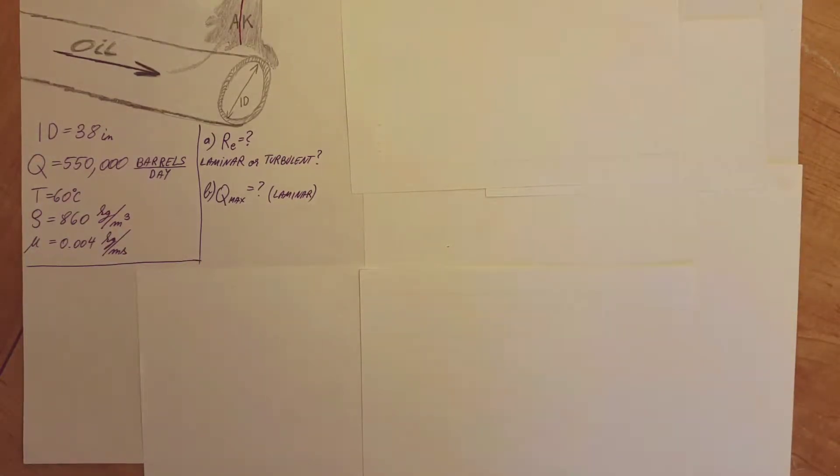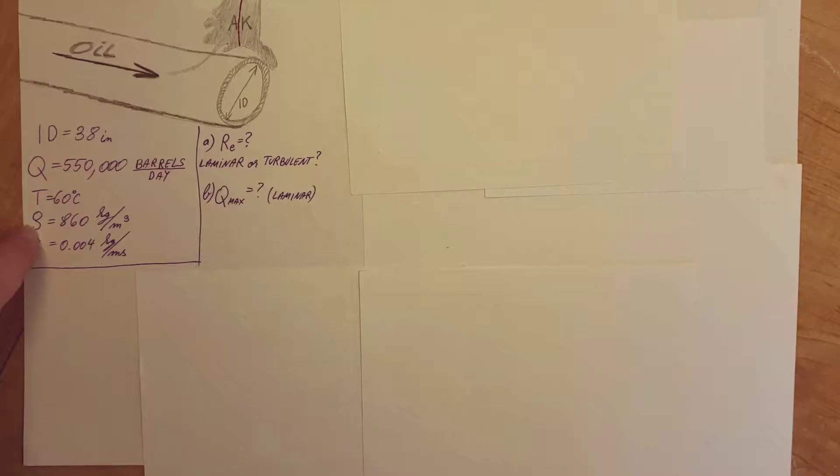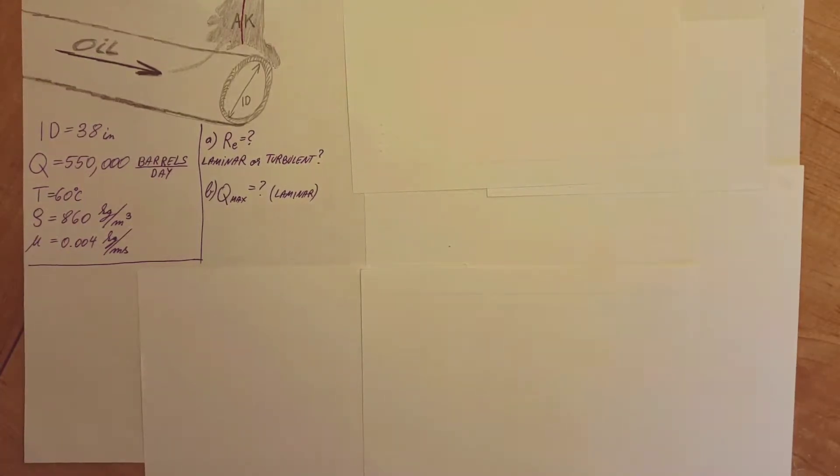All right, this is a fluid mechanics problem dealing with flow rates and the Reynolds number. In this problem, they're talking about the present pumping rate of crude oil through the Alaska pipeline with an inner diameter of 38 inches, which is 550,000 barrels per day. For this crude oil at 60 Celsius, they give us the density and viscosity. They want us to calculate the Reynolds number and determine whether this flow is laminar or turbulent.